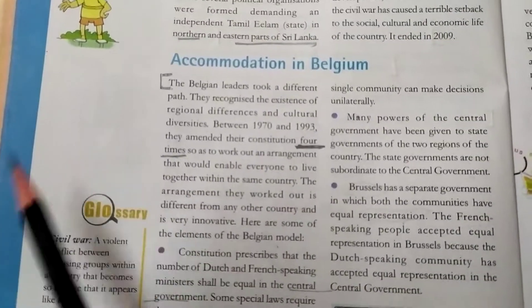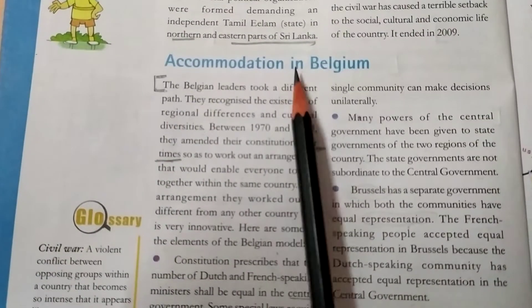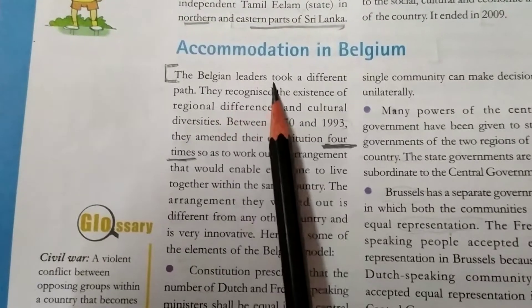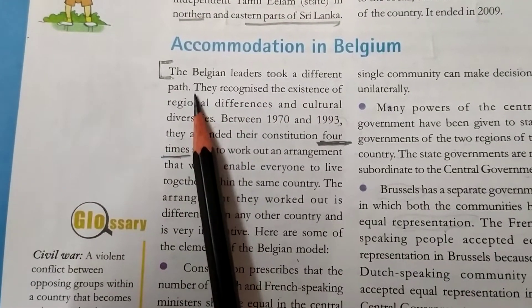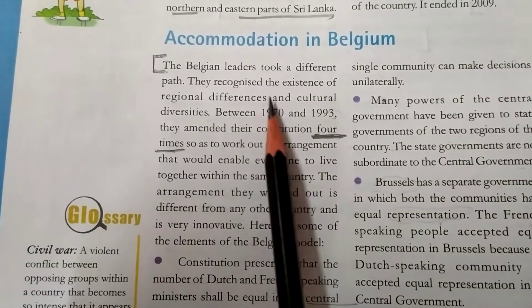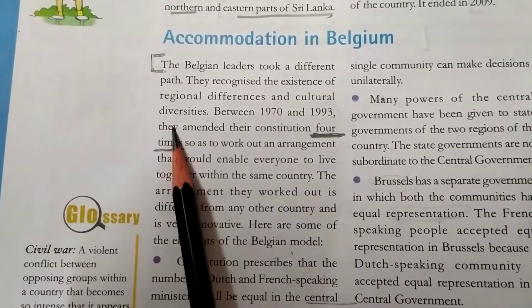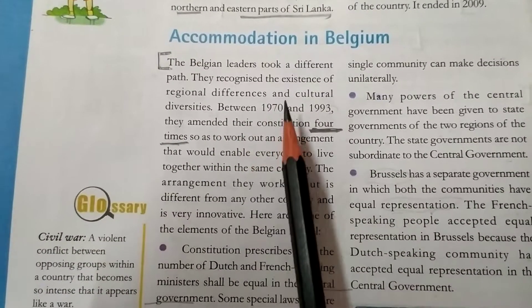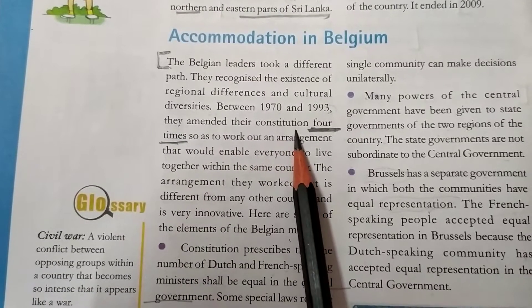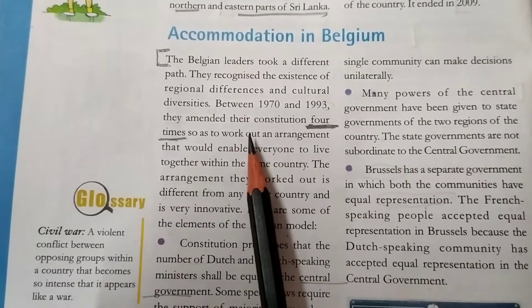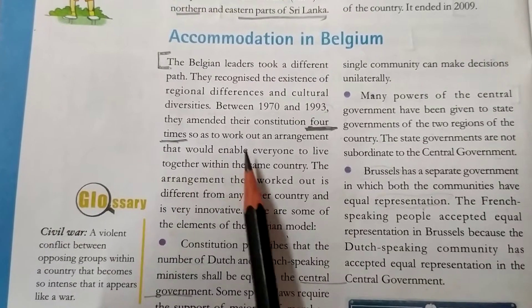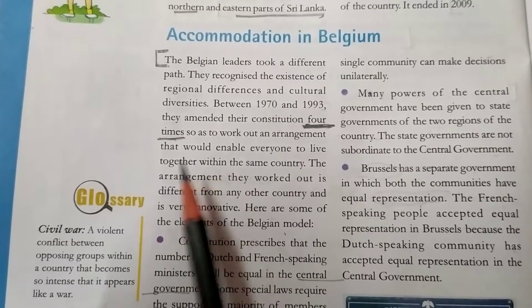Today we will learn about the accommodation in Belgium. The Belgian leaders took a different path — they recognized the existence of regional differences and cultural diversities. Between 1970 and 1993, they amended their constitution four times so as to work out an arrangement that would enable everyone to live together.